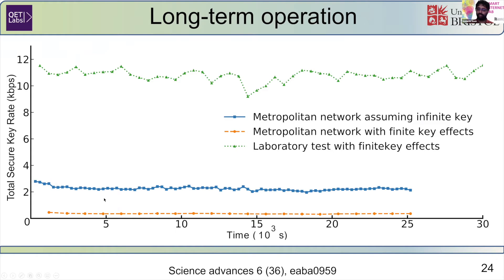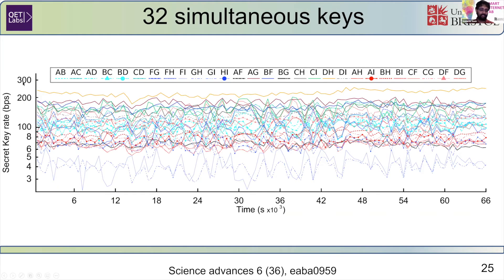We were able to show that this network can operate for very long periods of time. This is the entire 18-hour hold time of our detectors with rather stable key rates, and we can even account for finite key effects and long-distance links as well. This shows we are generating all 32 keys across the network simultaneously, where the longest-distance links have the least key rate and the regular links have a much higher key rate, reasonably stable across the entire time period.